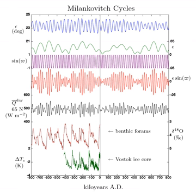Present and future conditions: Since orbital variations are predictable, any model that relates orbital variations to climate can be run forward to predict future climate, with two caveats: the mechanism by which orbital forcing influences climate is not definitive, and non-orbital effects can be important.